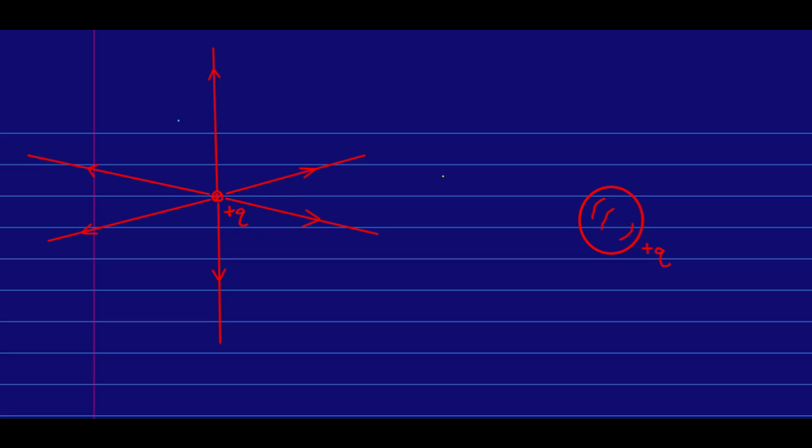It's also symmetric under reflection, through any plane that includes the sphere in the plane. And that's spherical symmetry. And so what that tells us is that if we draw a surface around this particle, and this surface is a sphere of some radius r,